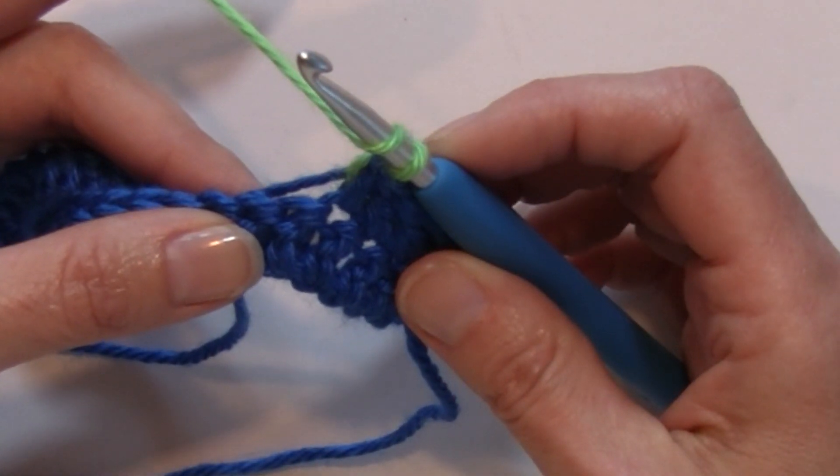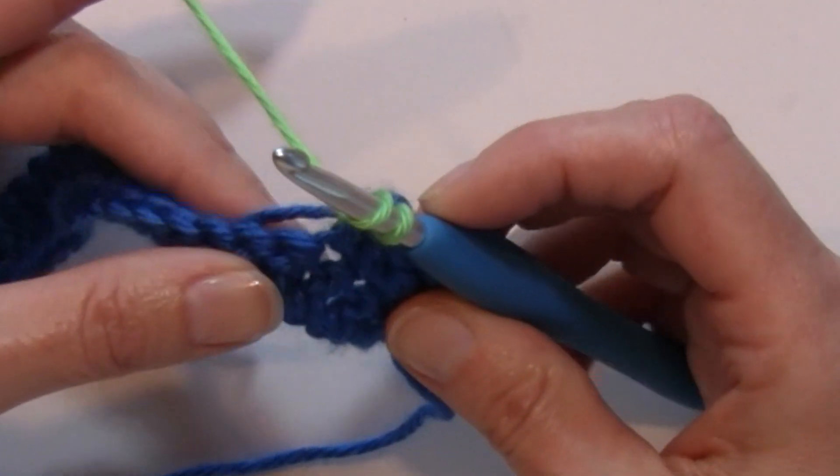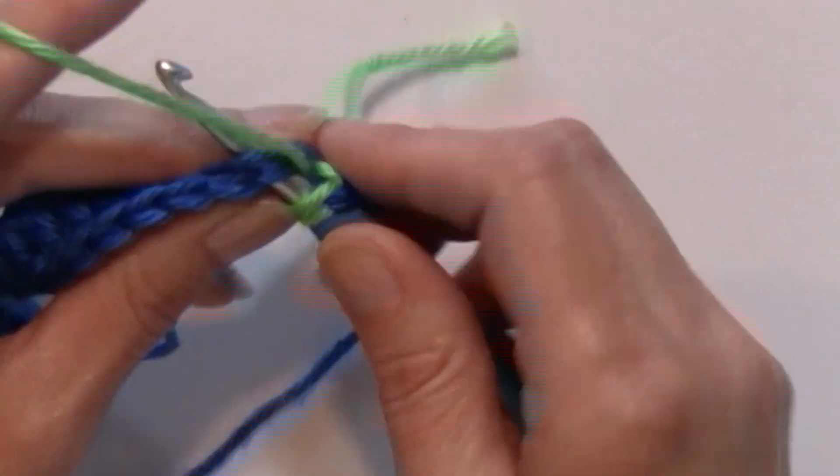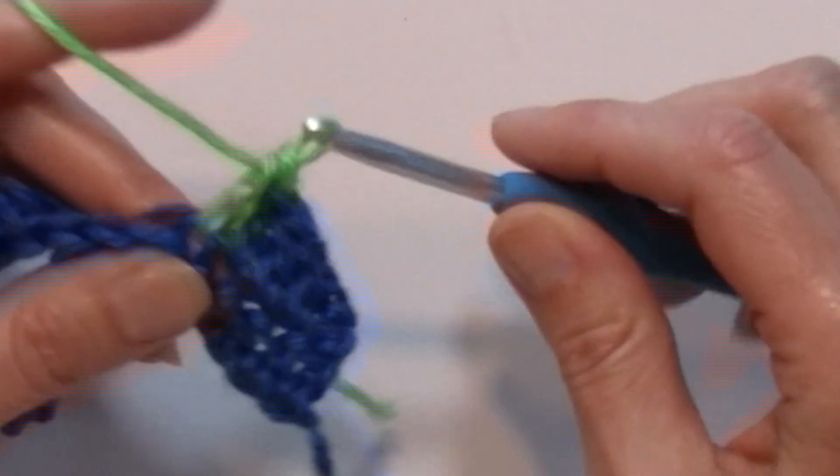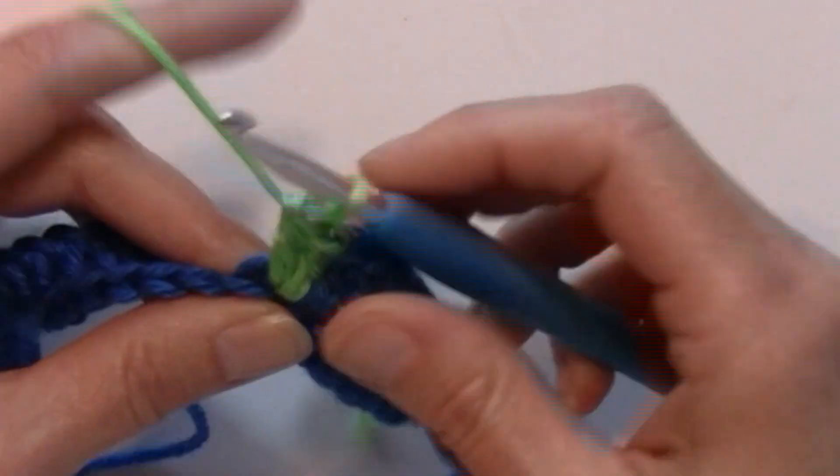With this popcorn stitch I'm going to be working four double crochets in the same stitch. Working over that color A, I'm going to make four double crochets in that same stitch.